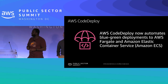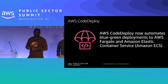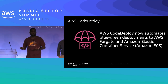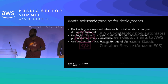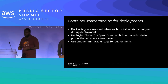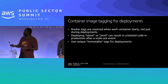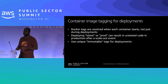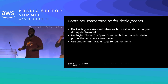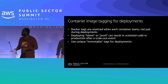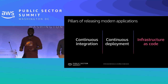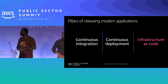We recently launched CodeDeploy blue-green deployments for Fargate and ECS, which was a frequent customer request. You can now automate blue-green deployments for Fargate and ECS. One recommendation for container workflows: Docker tags are resolved when containers start, so don't use referential tags like 'latest' or 'prod' — use unique, immutable tags for deployments, especially when scale-out occurs.